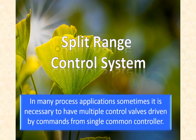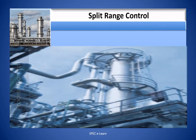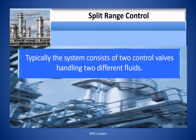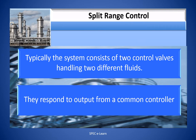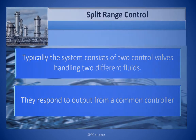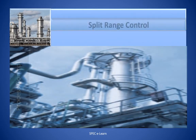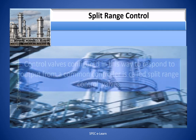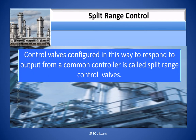In many process applications, sometimes it is necessary to have multiple control valves driven by commands from a single common controller. Typically, the system consists of two control valves handling two different fluids, and they respond to output from a common controller. Control valves configured in this way are called Split Range Control Valves.